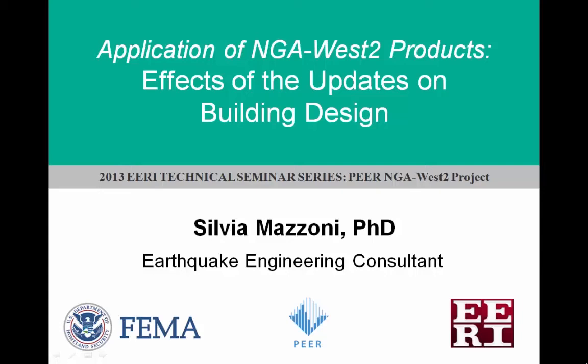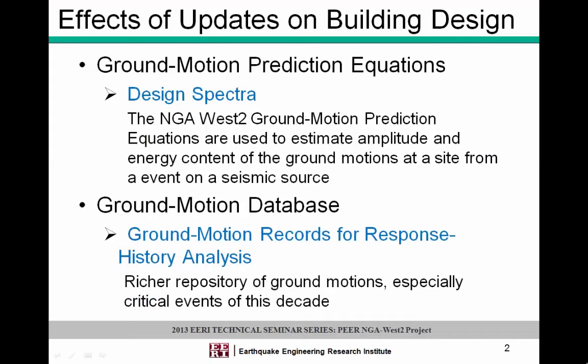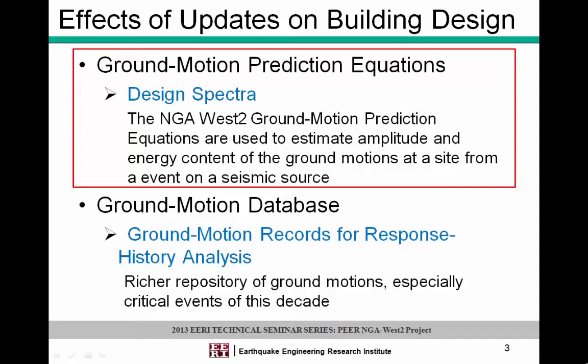I'm going to follow up on a different set of cases compared to what Nick is looking at — more about buildings and different locations where we would place buildings. In building design with the new NGA update, there are really two places where we're most affected: one is in the ground motion prediction equations for the design spectra, and the other is in the database and the actual ground motion records used for nonlinear response history analysis.